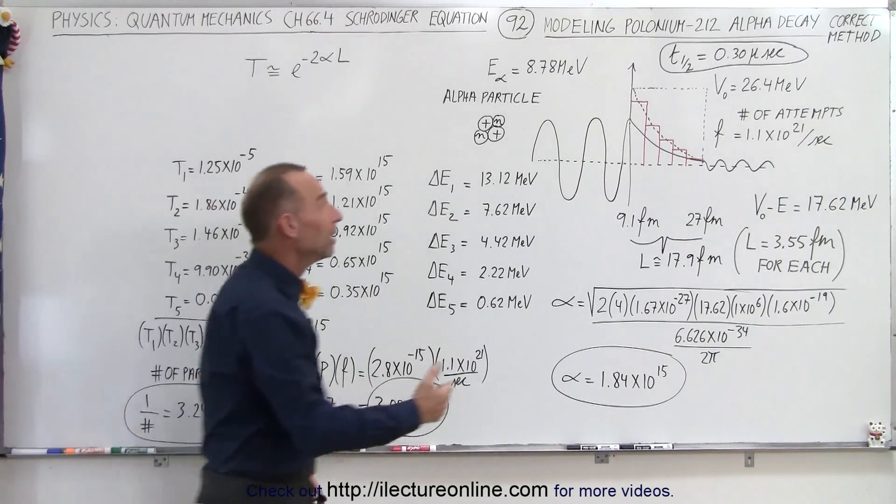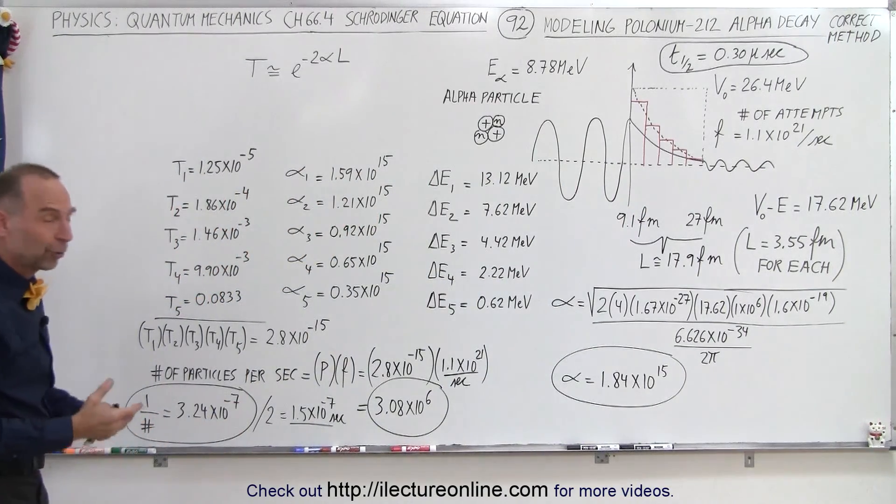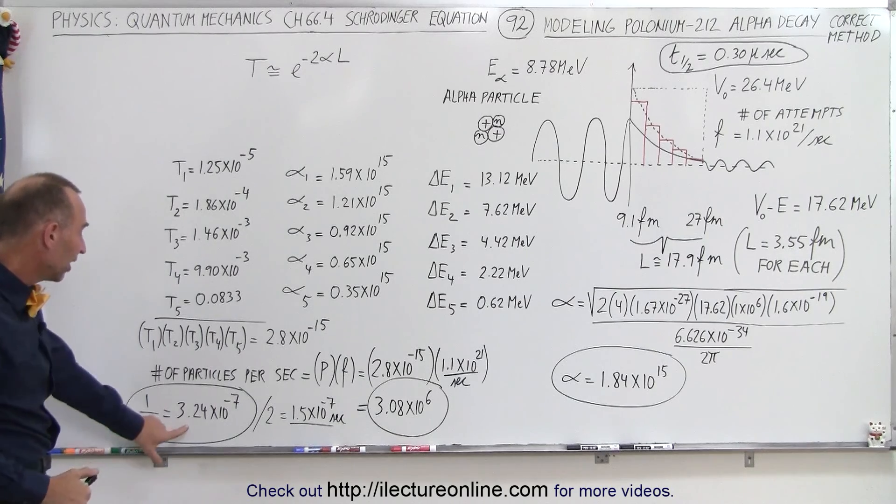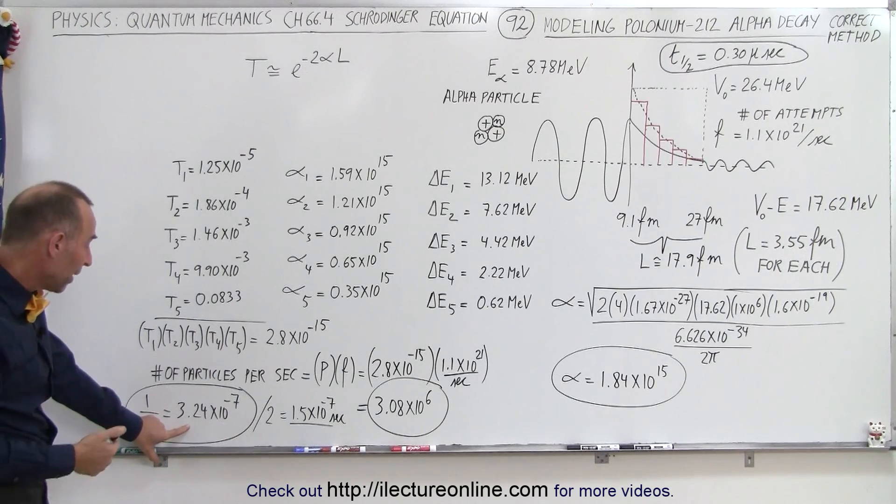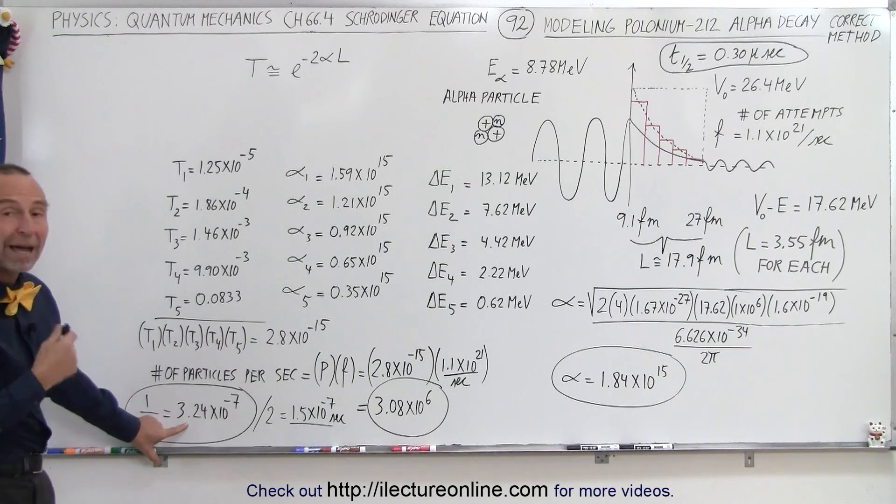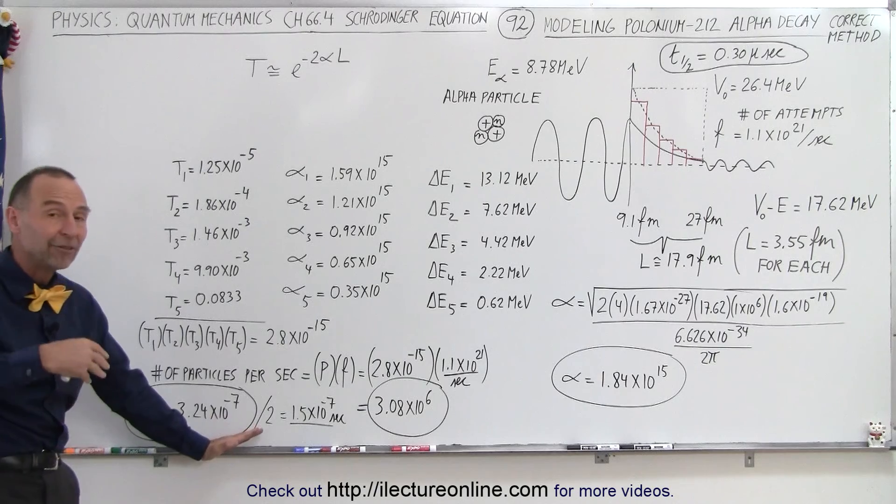Now of course there's only one alpha particle, so what we do is we take the inverse of that, which then tells us that on average about once per about three point something microseconds a particle breaks through. If we divide that by half, that gives us the approximate calculated half-life of the decay.